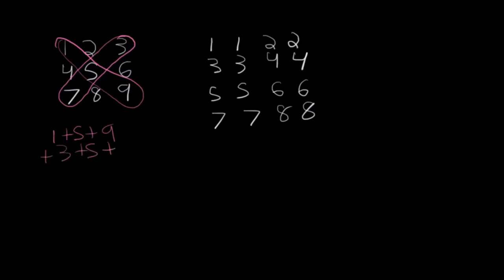But notice how the 5 is counted twice. So this is 1 plus 5 plus 9 plus 3 plus 5 plus 7. But there is an extra 5, so we would subtract 5, and we would get 25.